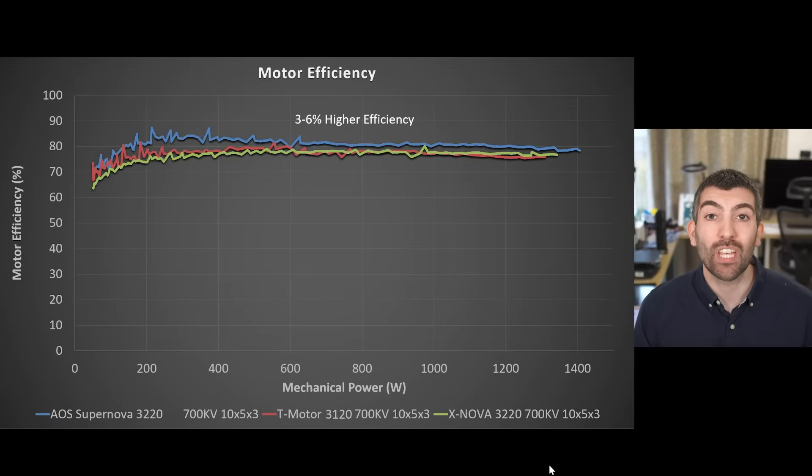Now let's move on to look at motor efficiency and this is measured again using a throttle ramp but this time we're looking at the mechanical power delivered by the motor compared to the amount of electrical power that it's consuming. In general the Xnova and T-motor 31 and 3220 motors were very very similar in terms of their efficiency across the whole throttle range all the way from about 50 watts mechanical all the way up to 1300 watts mechanical or so and they were sitting anywhere between about 77 and 78 percent efficient.